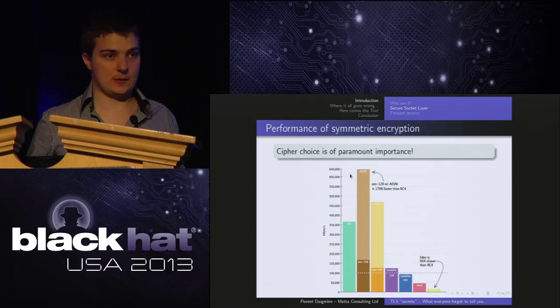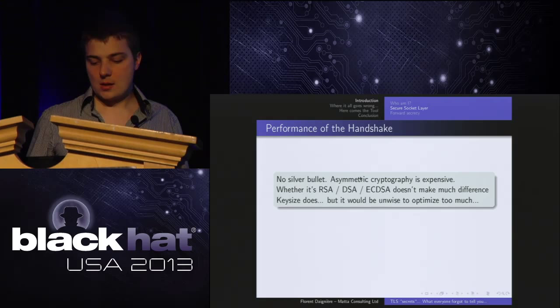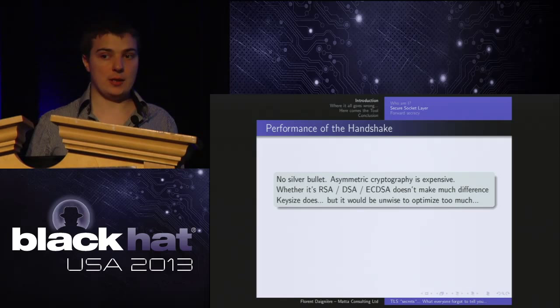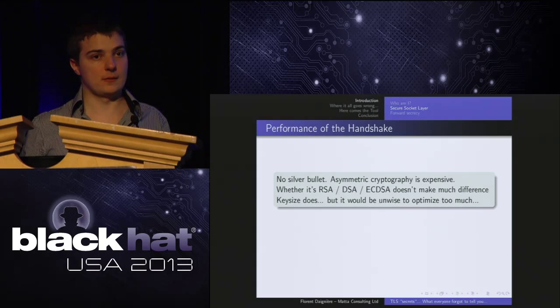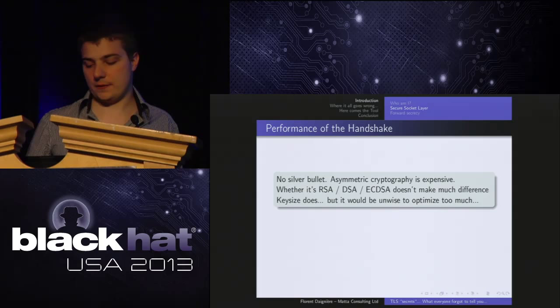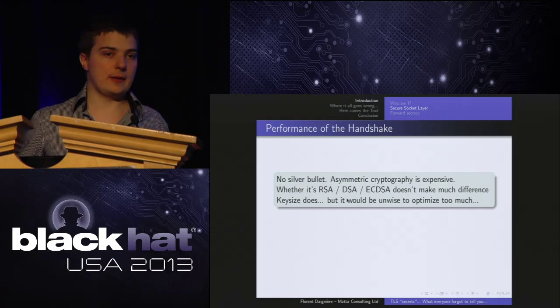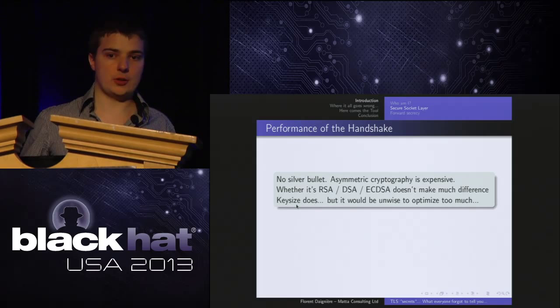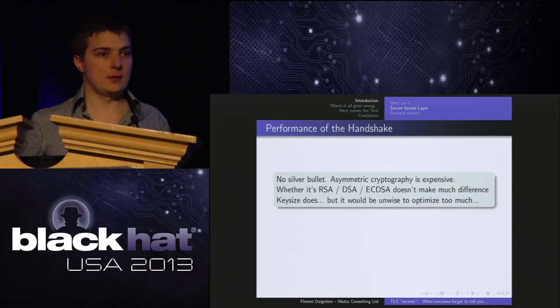The handshake performance cost is unfortunately something you can't avoid — there is no silver bullet. Asymmetric cryptography, whichever way you stretch it, is going to be expensive to some extent. You can use RSA, DSA, ECDSA — but at the end of the day it won't make much of a difference. One thing you can optimize is key size. If you use RSA 2048-bit keys — that's really the minimum you should be comfortable with nowadays. Anything smaller and you'll have nasty surprises very soon.